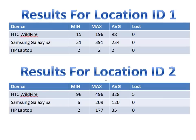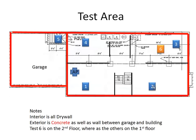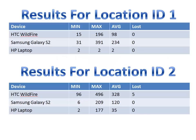Location two is just a little area over from the access point. All of a sudden the Wildfire's minimum and average shoot up. The laptop also goes up a bit. Interestingly, the Samsung Galaxy actually got better. In the real world I would not settle for one test — I'd do multiple tests, drop the high, drop the low, and average three results.